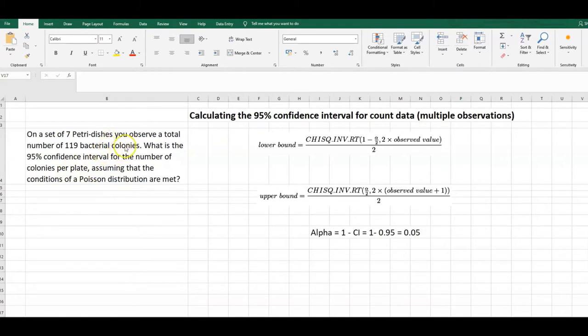So what's the average number of colonies per plate that we would assume or observe when we did this experiment a lot of times. What we can do is calculate the confidence interval of these 119 bacterial total counts, then take the average per petri dish. To find the lower and upper bound of the confidence interval, we can use these Excel equations here.